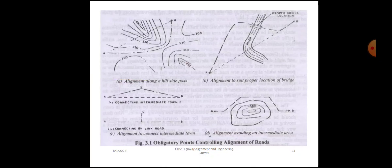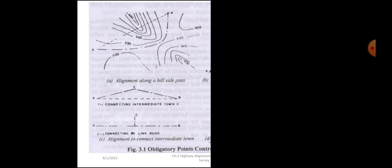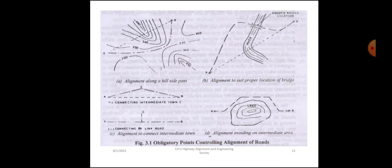The first figure shows alignment along a hillside pass. The second figure shows alignment to suit proper location of a bridge. The third figure shows alignment to connect an intermediate town. The last figure shows alignment avoiding an undesirable intermediate area.